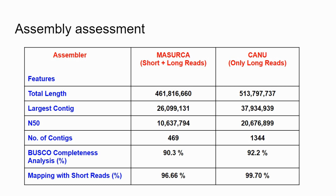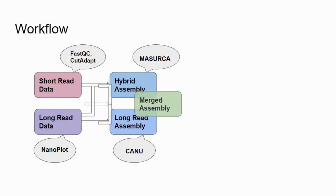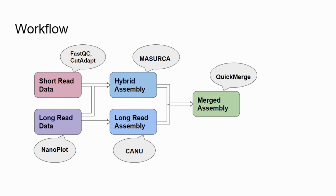Our hybrid assembly from the Masurca assembler has an N50 of around 10 MB and number of contigs of 469. The long-read assembly has an N50 of 20 MB and a higher number of contigs at around 1,300. For both assemblies, the BUSCO score and the mapping rate are above 90%.